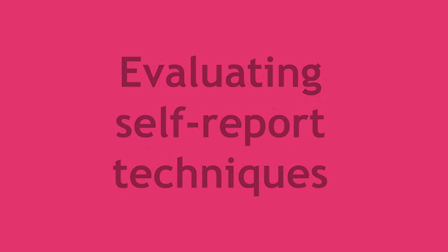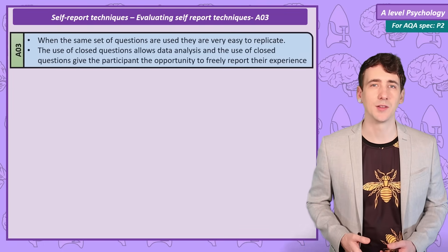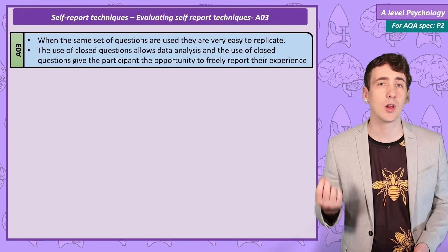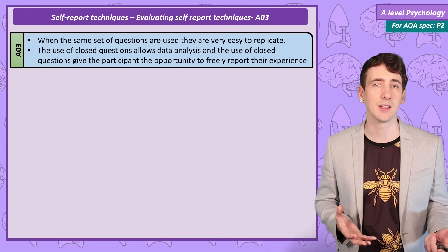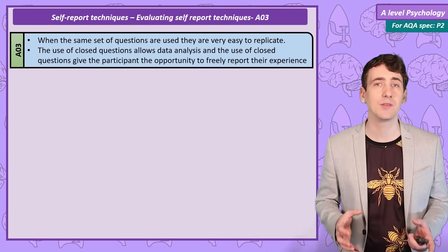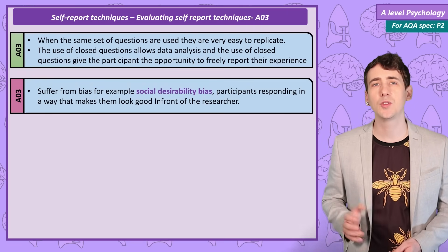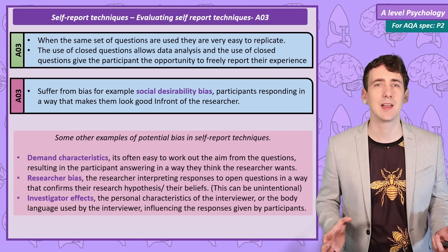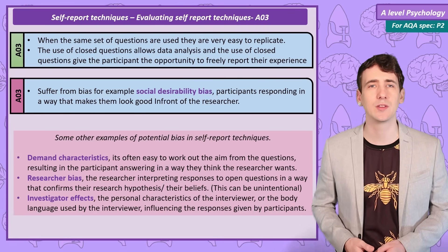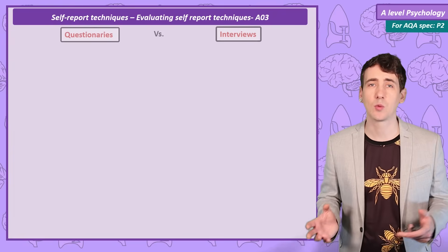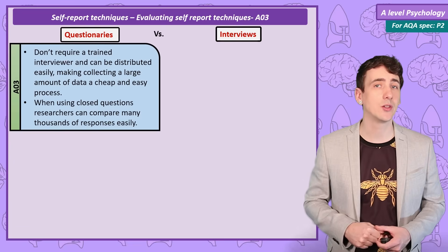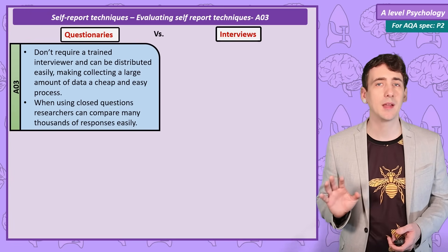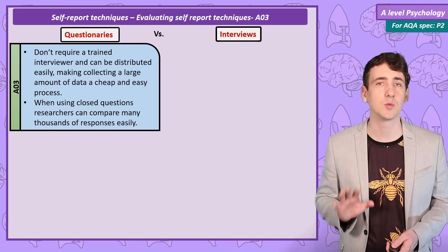Evaluating self-report techniques. Self-report techniques are a useful method for psychologists — they're easy to replicate using the same set of questions, and the use of open and closed questions gives data that can be analysed with statistics as well as the opportunity for participants to give detailed information about their experience. However, they do suffer from bias, especially social desirability bias, as people want to be seen in the best light and will often lie in their responses to look good to the researcher. Comparing questionnaires to interviews: questionnaires don't require a trained interviewer and could just be posted online, meaning they're very cheap to give to large numbers of people, making them particularly good for data analysis when using closed questions.